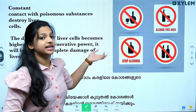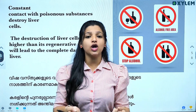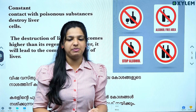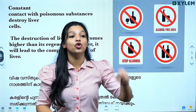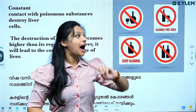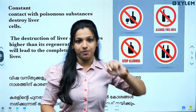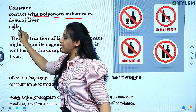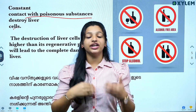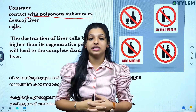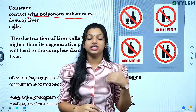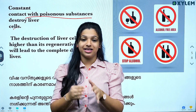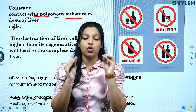If we take in alcohol, the nitrogenous compounds in our body can damage the liver. Constant contact with poisonous substances destroys liver cells. Then toxic substances will remain and the liver becomes ill. Alcohol can damage nitrogenous compounds and act on liver cells.